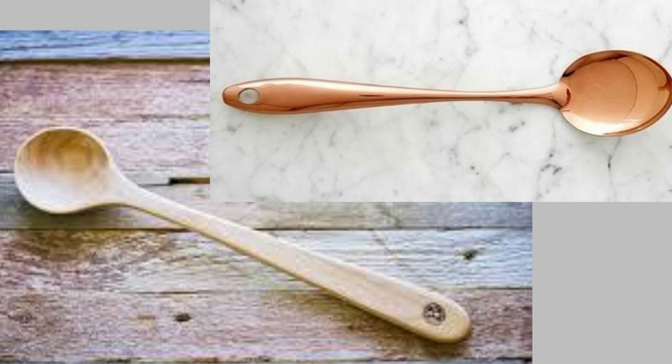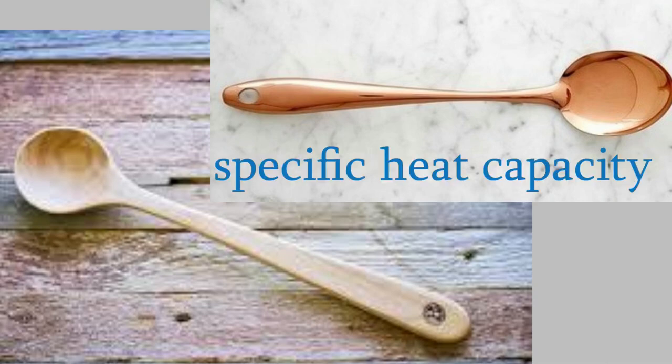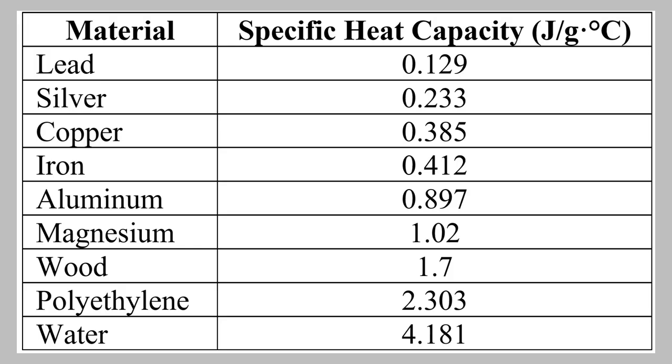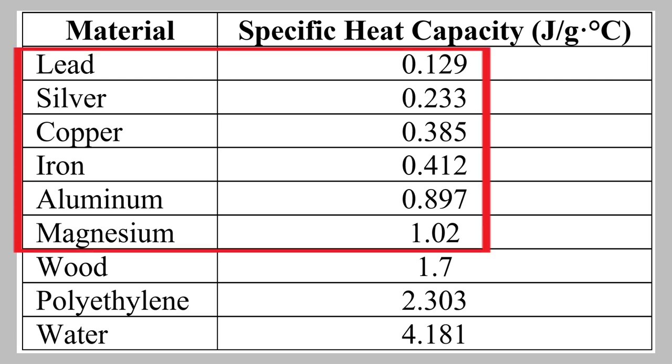It's easier to heat up some materials than it is to heat up others. In comparison to copper, wood is very difficult to heat to a high temperature. This property is called the specific heat capacity, which has the symbol C. Here's a table of the specific heat capacities of several different materials. As you can see, most metals have a very low specific heat capacity. That means it doesn't take much energy to cause them to become hot.